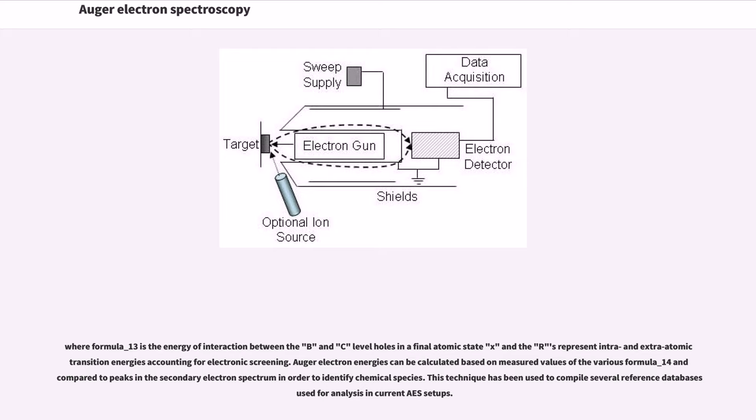Where U_BC(X) is the energy of interaction between the B and C level holes in a final atomic state X, and the R terms represent intra and extra atomic transition energies accounting for electronic screening. Auger electron energies can be calculated based on measured values of the various binding energies and compared to peaks in the secondary electron spectrum in order to identify chemical species. This technique has been used to compile several reference databases for analysis in current AES setups.